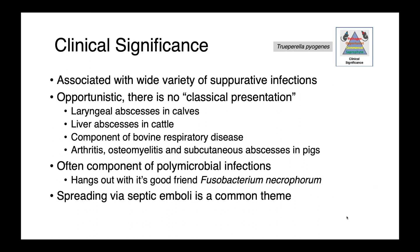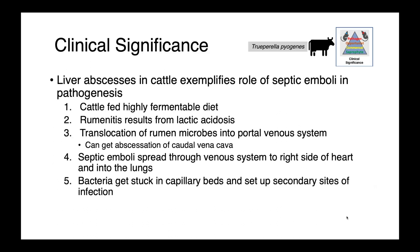Another common theme with Trueperella pyogenes is that it likes to spread by septic emboli. A classical example of this is liver abscesses in cattle. Cattle with grain overload get a highly fermentable diet, leading to ruminitis from lactic acidosis and translocation of rumen microbes into the portovenous system. You can get abscessation of the caudal vena cava, and then septic emboli spread through the venous system to the right side of the heart and lungs. Bacteria get stuck in capillary beds and set up infections at secondary sites, leading to metastatic abscessation — part of the same process involving Strep bovis and lactic acidosis discussed previously.